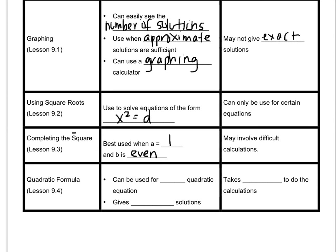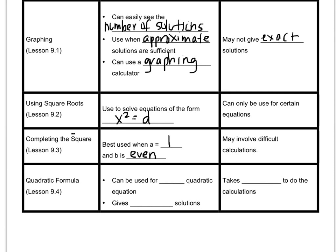And then lastly, we use the quadratic formula. And I told you that some people prefer this because you can use it for any quadratic equation. And if your answer is a decimal and you need an exact answer, this is the one that you're going to want to use, because it gives exact solutions.